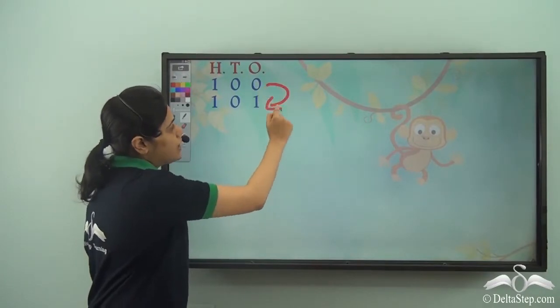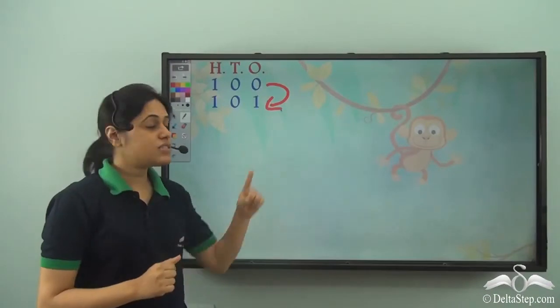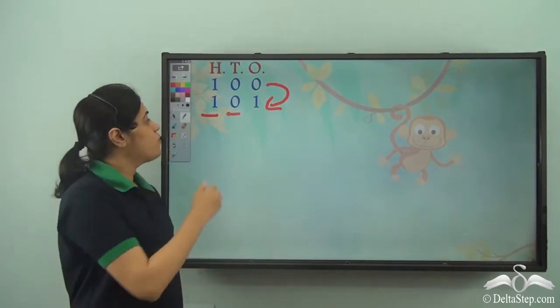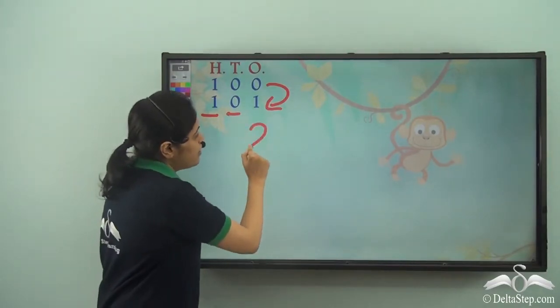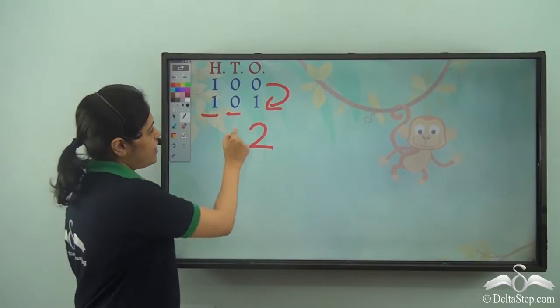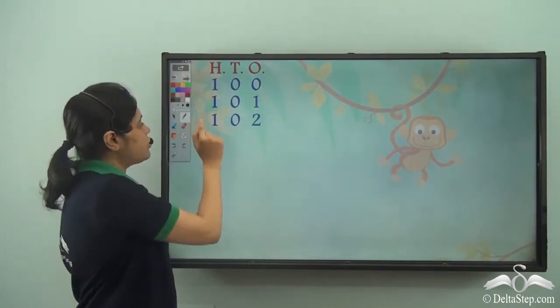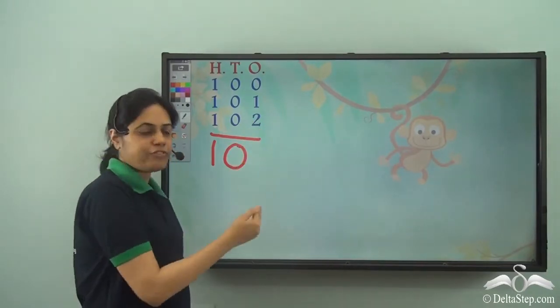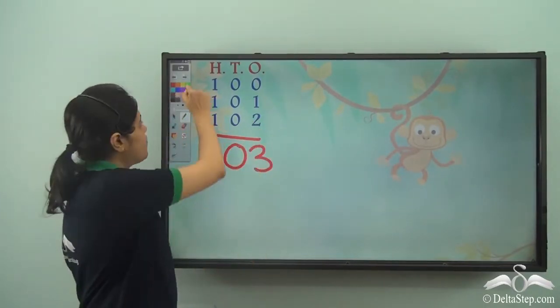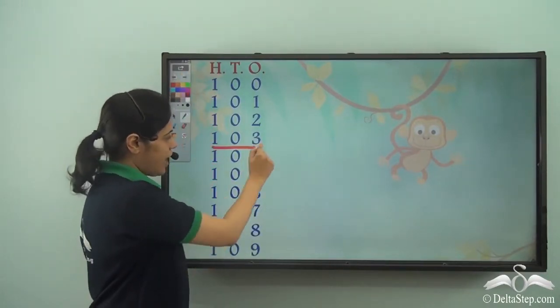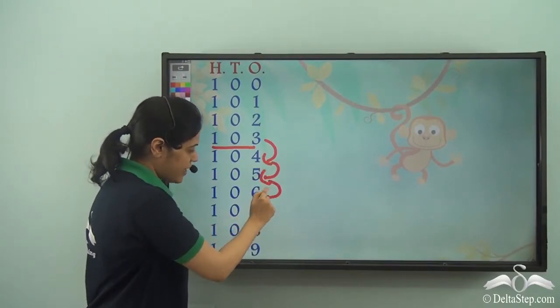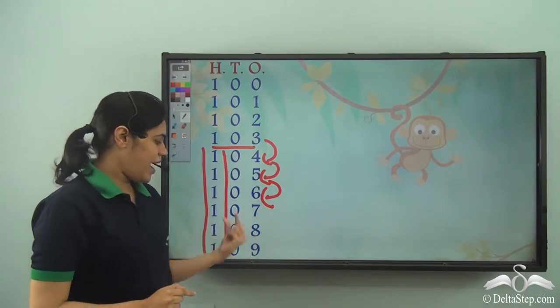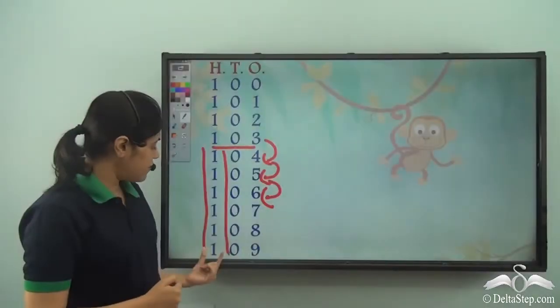So this 0 increases by 1 and becomes a 1. That is the 0 in the 1's digit becomes 1. Whereas these digits to the left remain the same. What will come after 101? So this 1 will increase and become 2. Whereas these 2 will remain the same. So I will have 102. What will come after 102? So this will remain the same. This will remain the same and after 2 I have 3. So 103. Similarly after 3 I have 4, after 4 I have 5, after 5, 6, so on till 9 and this and this remain the same. That is the 100's digit and the 10's digit remain the same.